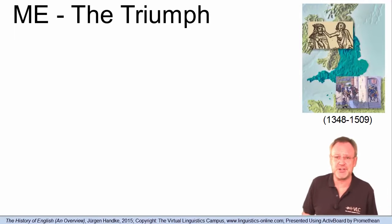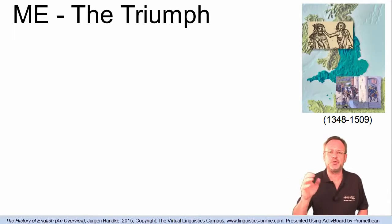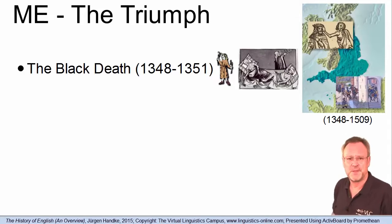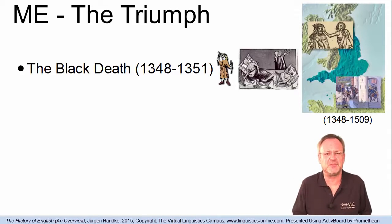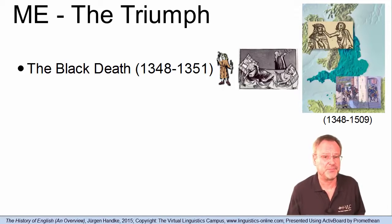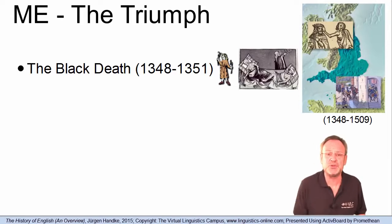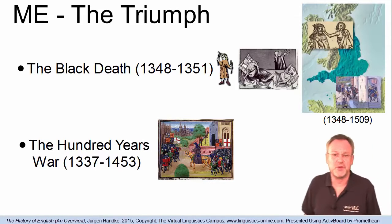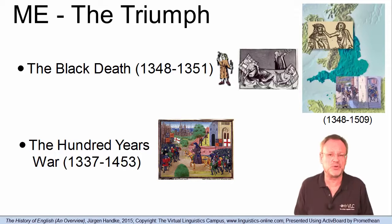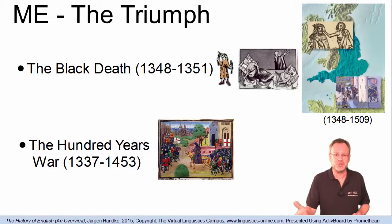Although French remained the official language of England well into the 14th century, two events of that time sealed its fate. The first was the Black Death: between 1348 and 1351, one-third of the people in England died. This led to enormous labour shortages and an increase of the prestige of English, which was the language of the working class. Another event was the Hundred Years' War, from 1337 to 1453, which led to a loss of all continental holdings, without which the English no longer had important reasons for learning and using French.